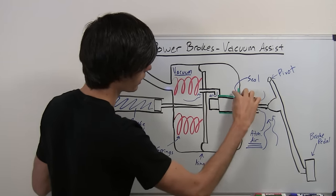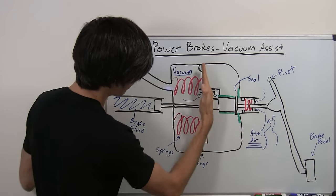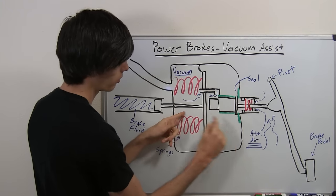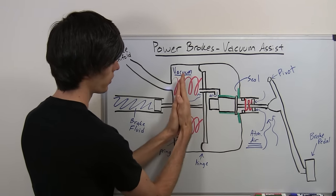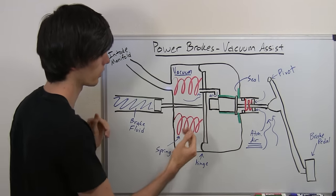So as that's sealed and the atmospheric pressure comes in, it's going to push very hard on this plate because you've got a vacuum on one side, high pressure on the other. It'll force it this direction, and that will make it much easier for you when you push on the brake pedal, so you don't have to push in as hard.